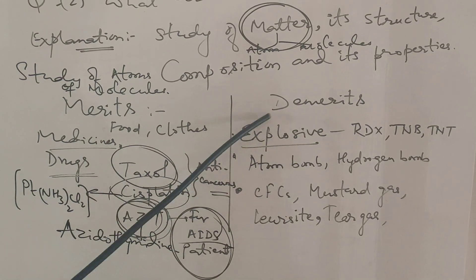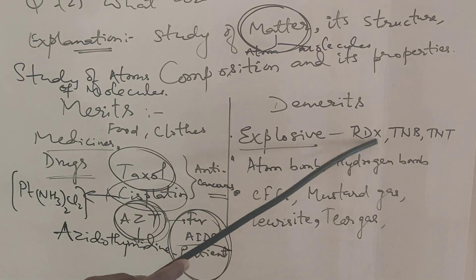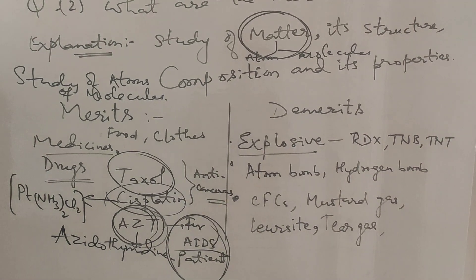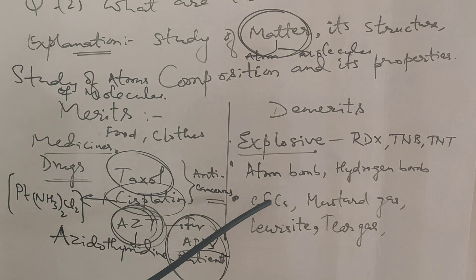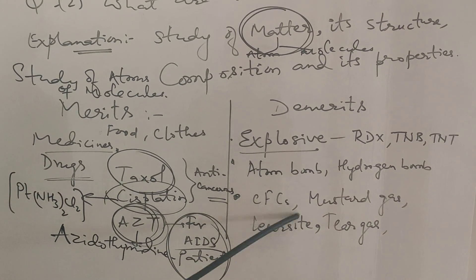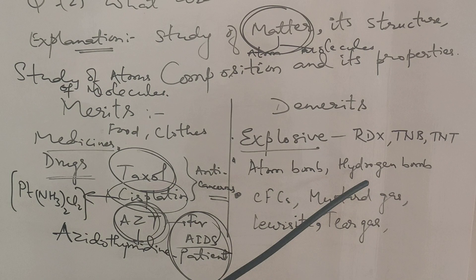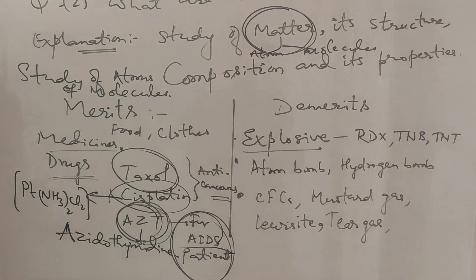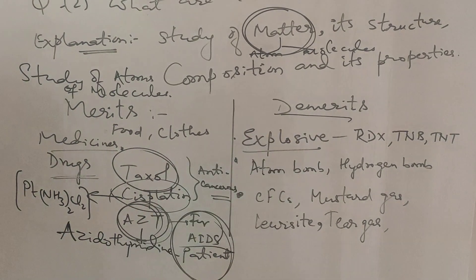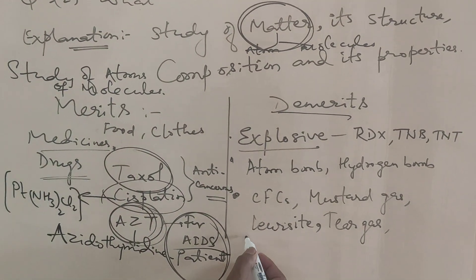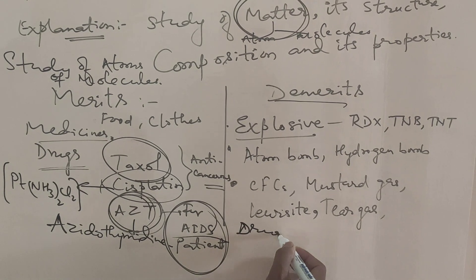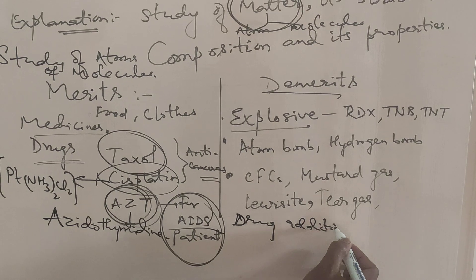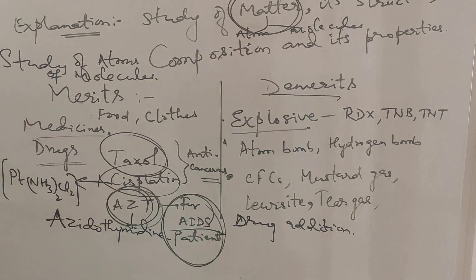Now coming to the demerits of chemistry — there are many types of explosives like RDX, TNB (trinitrobenzene), TNT (trinitrotoluene), ammonium nitrate, atom bomb, and hydrogen bomb. Chlorofluorocarbons are responsible for ozone depletion. Mustard gas and tear gas were used in World Wars. Drug addiction is also a demerit of chemistry.